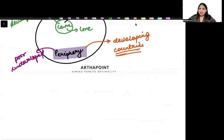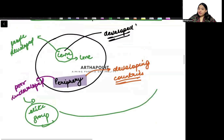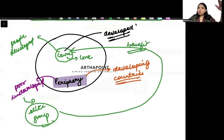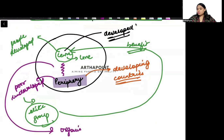Within this periphery, there will be some elite group, some rich people who will benefit from the center. There will be a link between center and periphery through some organizations like IMF, World Bank, etc.